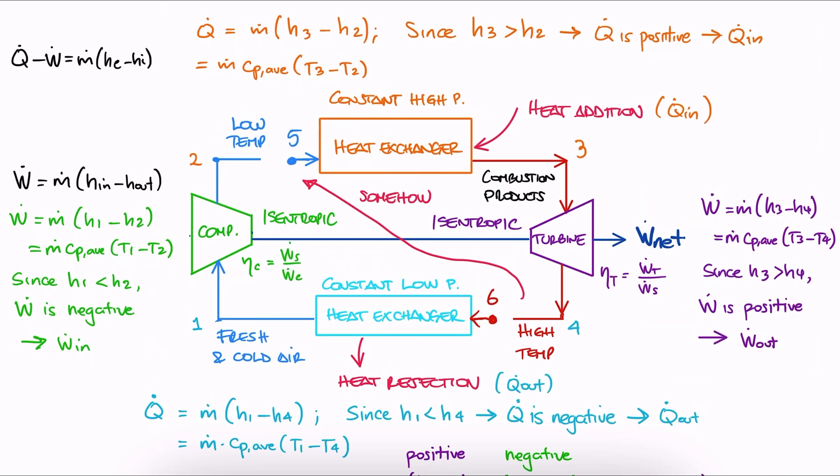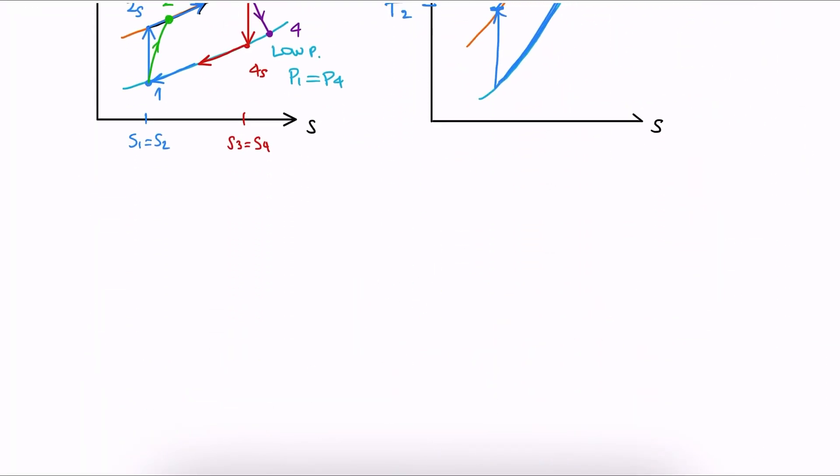For now, let's look at a simple example where we briefly apply what we learned today. If you want to check out more complex examples on this topic, make sure to check out the links in the description of this video. A simple ideal Brayton cycle uses air as the working fluid and has a pressure ratio of 10.